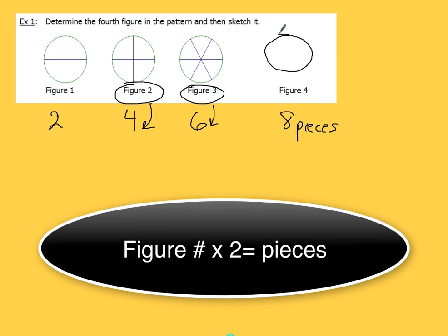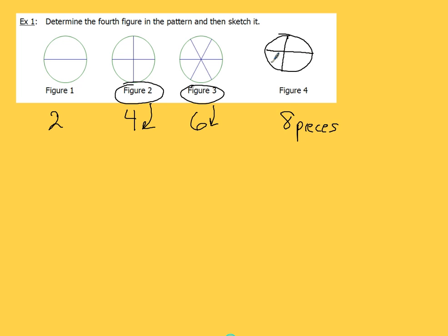So I would just go ahead and draw a circle, and then divide that up into 8 even pieces, which sometimes is a little bit tough to draw, but we'll do the best we can with that. We've got 1, 2, 3, 4, 5, 6, 7, 8 around there. So that's all that last picture would look like. Figure 4 would have 8 pieces in it, and it would be circular just like the previous one.